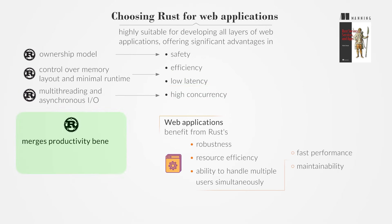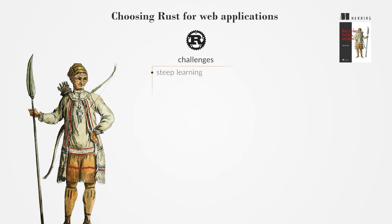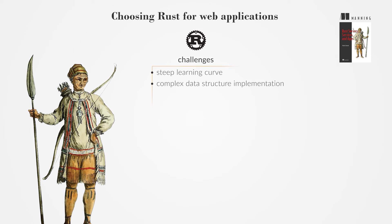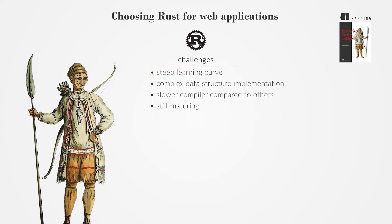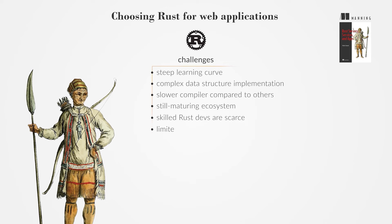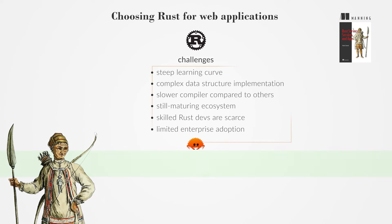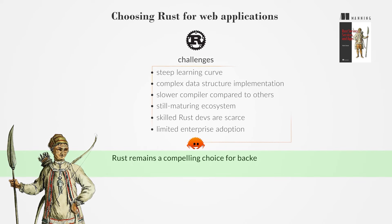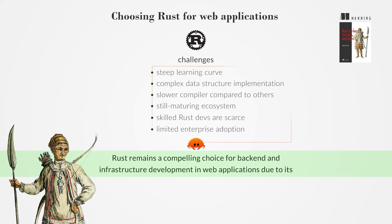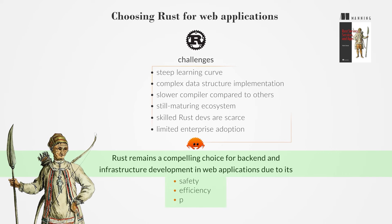Rust also merges productivity benefits from higher-level languages with system-level control. However, Rust presents challenges such as a steep learning curve, complexity in implementing certain data structures, a slower compiler compared to others, and a still-maturing ecosystem. Additionally, finding skilled Rust developers can be difficult, and its adoption in large enterprises is not yet widespread. Despite these challenges, Rust remains a compelling choice for back-end and infrastructure development in web applications due to its blend of safety, efficiency, and productivity.